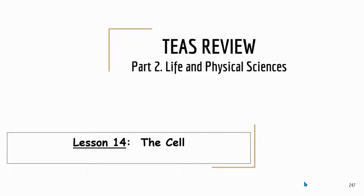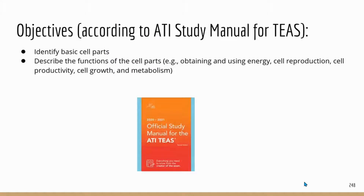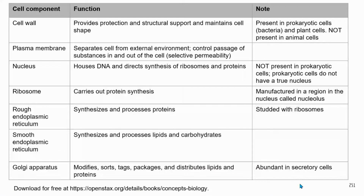Today we're going to look at the cell. The information in this chapter is very straightforward, nothing very complicated. You may have to work a little bit to memorize the information. For the cell, TEAS expects you to identify basic cell parts and know the functions of the different cell parts. Based on the information in the TEAS study manual, I made this huge table listing the cell parts mentioned in the study manual, the information on the function, and some notes.